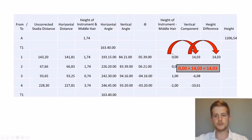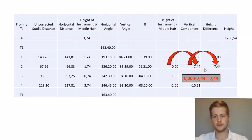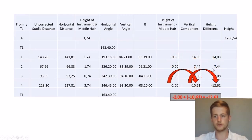Now we're going to use this to calculate our height difference. We take our height of instrument minus our middle hair reading, plus our vertical component, to get our height difference. For this one we'll have 0 plus 14.03. This last one will make quite a big difference since we had a negative, and especially because our vertical angle was above 90 degrees.